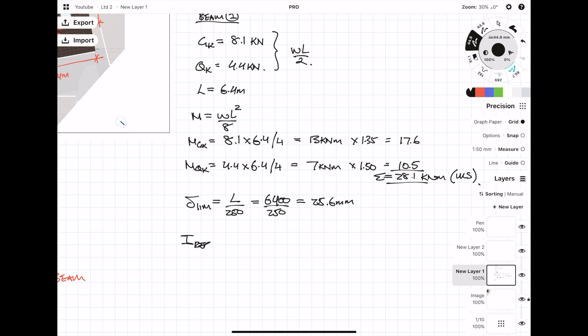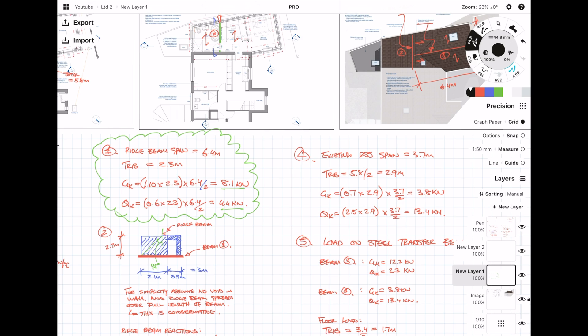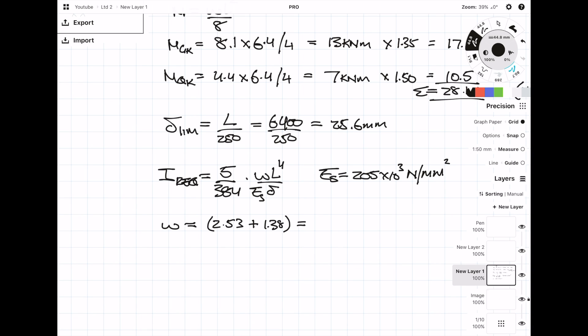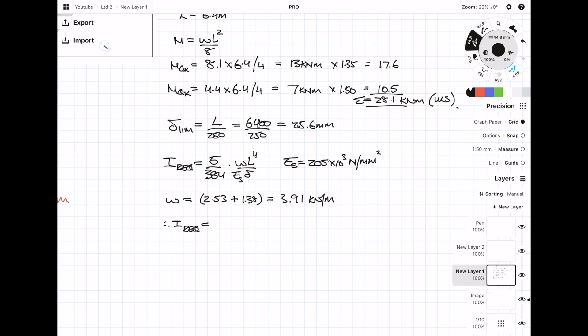We can now work out the I value required, which is the second moment of area. So we worked out an I value of 1628.